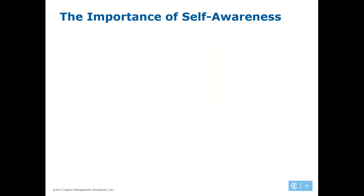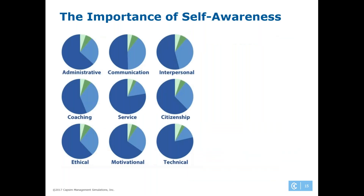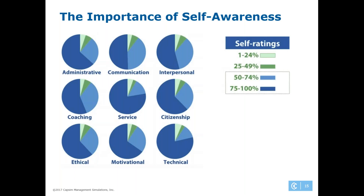Now let's talk about the importance of self-awareness. We looked at an empirical self-assessment where participants were tasked with rating themselves across nine key managerial competencies — administrative, communication, interpersonal, and so on. What we found is that we have an ability to over-rate ourselves: the majority of students were placing themselves in the top 50%, and in some scenarios all the way up to the top 25%. This is actually the result from a survey of over 2,500 MBA students.